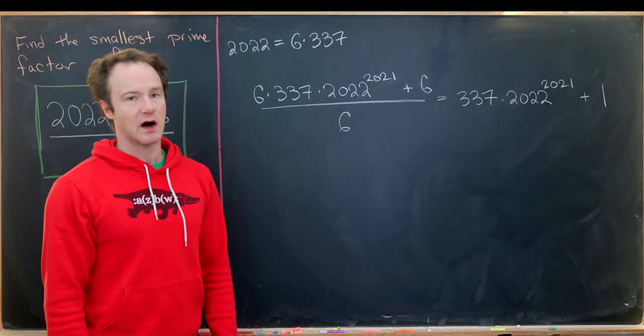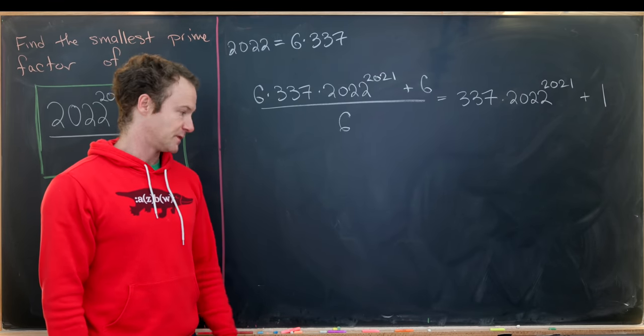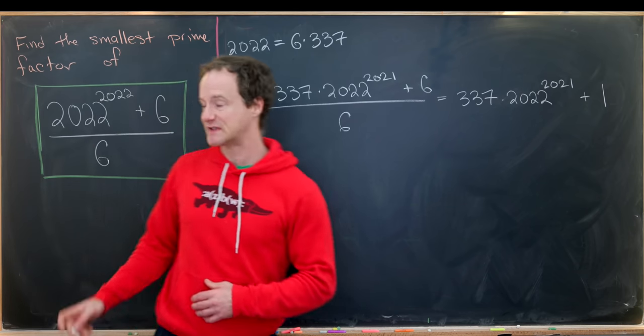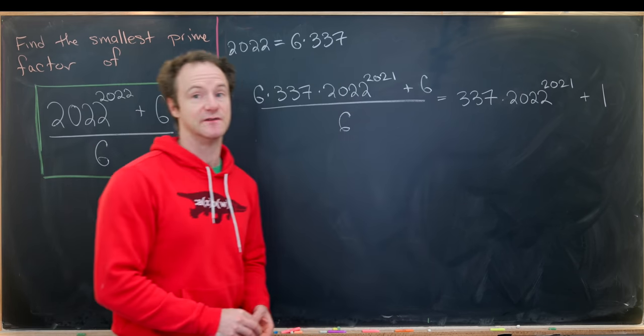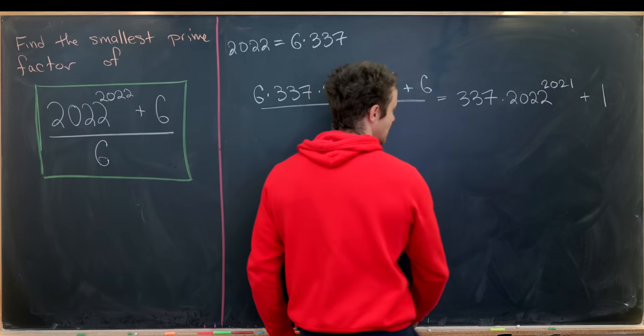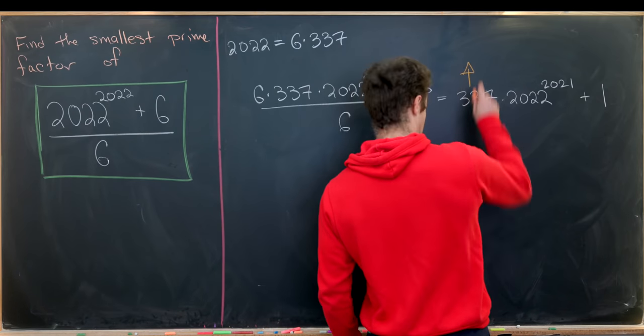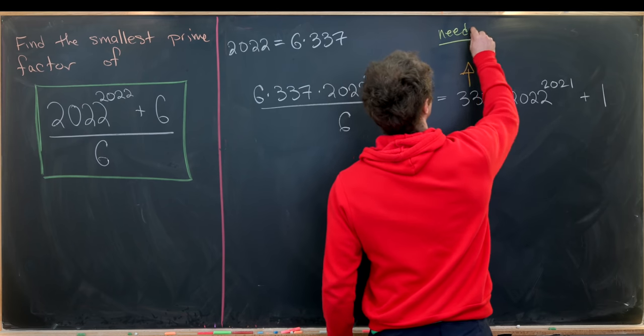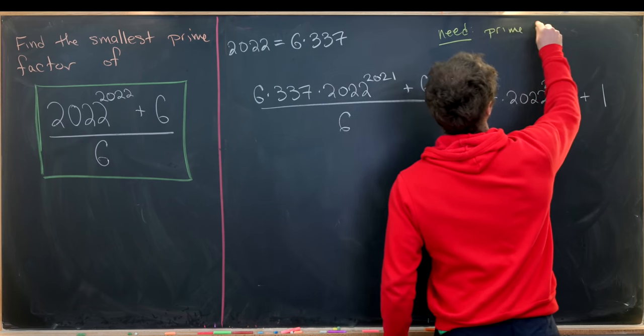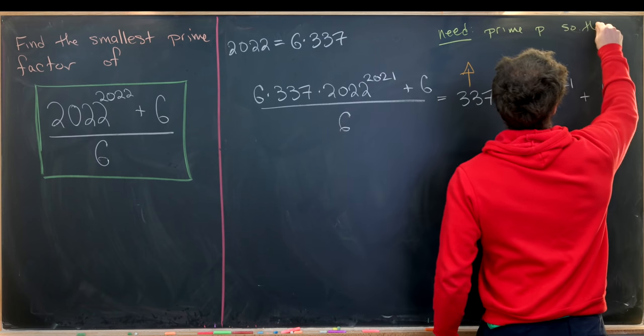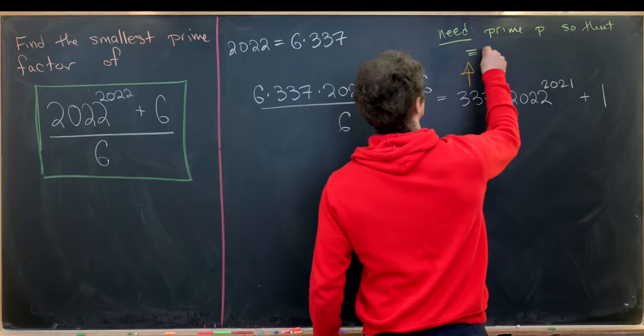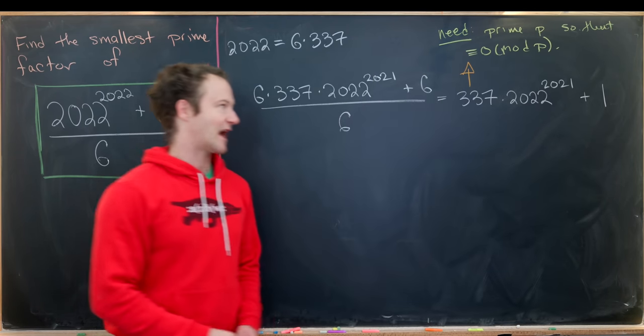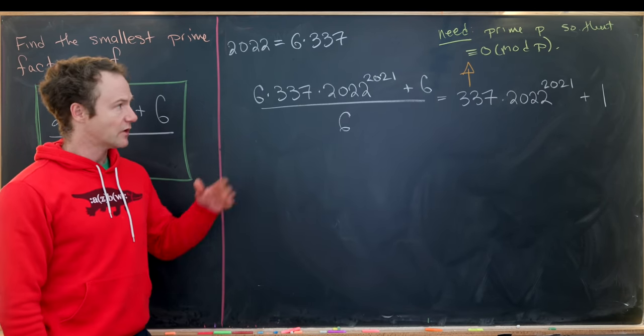Now we need to reduce this modulo a prime and then show that that reduces to zero mod that prime. That would be the same thing as saying that this thing is divisible by that prime. So we need a prime p so that this is congruent to zero modulo p. That means that prime would be a factor of this number.